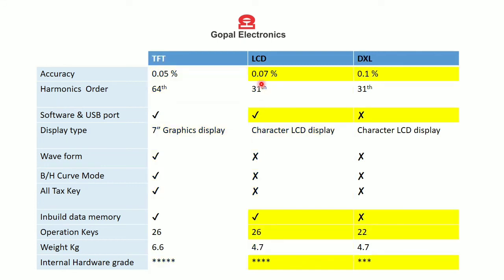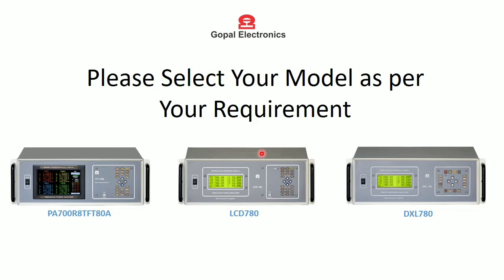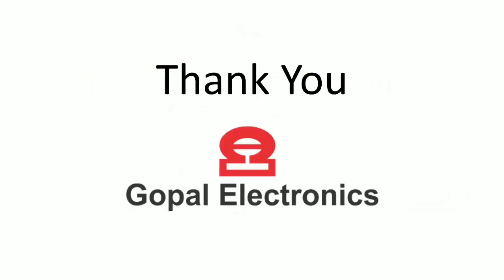Now we will see the advantages of the LCD model over the DXL model. Accuracy is higher in the LCD model. Software is provided in the LCD model but not in the DXL model, therefore inbuilt data memory is available in the LCD model only. There are more operation keys in the LCD model than in the DXL model, and as per hardware grade, the LCD model is leading. This was the main difference between all three models of power analyzer — please select your model as per your requirement. Thanks for watching!